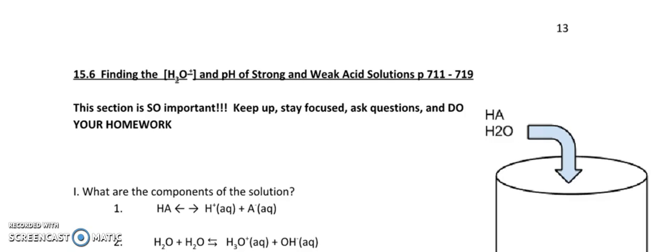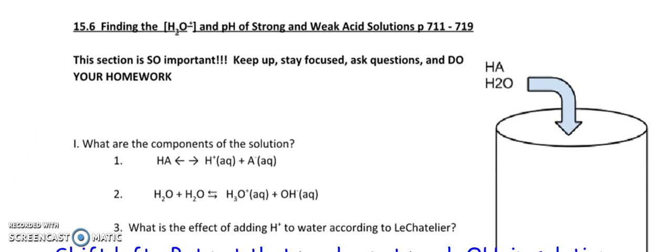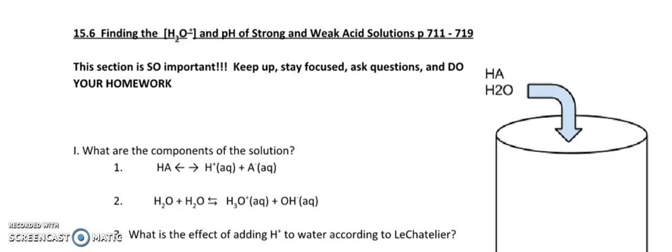So we have a solution here. What are the components of the solution? We have this weak acid. How do I know it's a weak acid? I have a double arrow. So it's an equilibrium. So a weak acid, I'm going to throw in some water. So what do I make? We make some H+, we make some A-, we have some HA that didn't dissociate, but what else is in solution? It's the water.